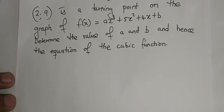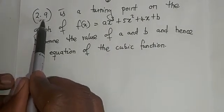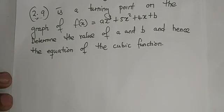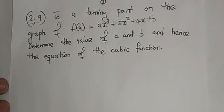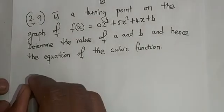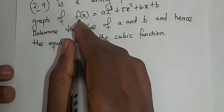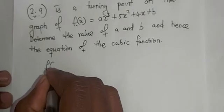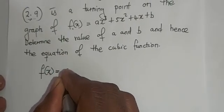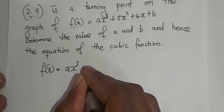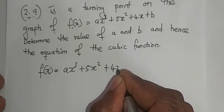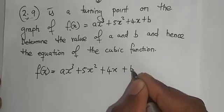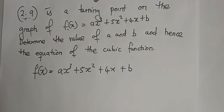But the information that we are told is that this is a turning point. There is one thing that we know: the gradient at a turning point is 0. Therefore, we are given f(x) = ax³ + 5x² + 4x + b. So at a turning point, the derivative is 0.